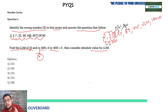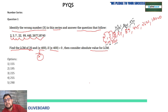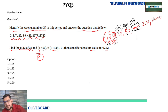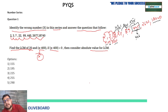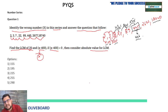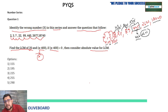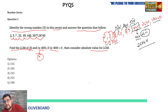So the pattern is: multiply 1 + 1, multiply 2 + 1, multiply 3 + 1, multiply 4 + 1. Next must be multiply 5 + 1. So 89 × 5 = 445 + 1 = 446, but the series shows 445. This might be the wrong number. We are not confirmed yet — we need to check further. Going with 446: 446 × 6 + 1 = 2677. Yes, that matches the next term.